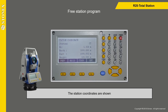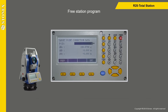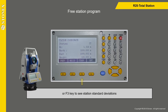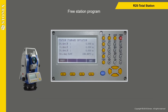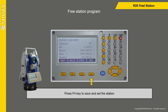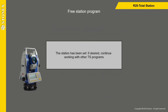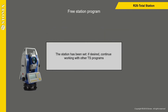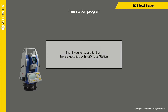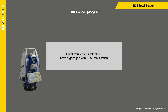The station coordinates are shown. Press F4 key to confirm the limit check. The station has been set. If desired, continue working with other total station programs. Thank you for your attention — have a good job with our 25 total station.